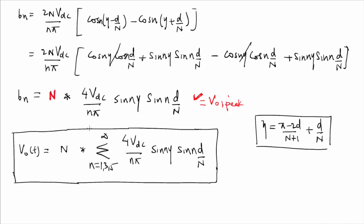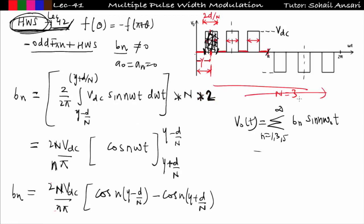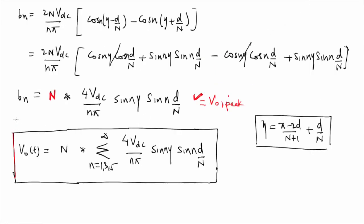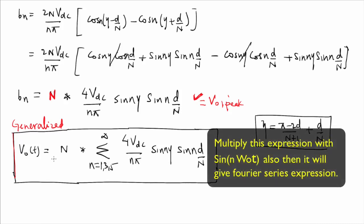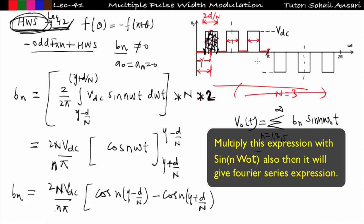So bn is nothing but V₀₁(n-peak), where capital N is the number of pulses per half cycle and small n is the harmonic number. The final generalized Fourier series expression for multiple PWM is: v₀(t) = N × summation over n = 1, 3, 5,... of (4Vdc/nπ) × sin(n·gamma) × sin(n·d/N). For any value of N you can apply this. Take N = 2 for two-pulse, N = 1 for single-pulse.